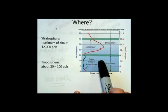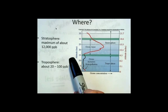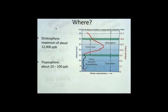So it's showing that in the stratosphere is where we find a higher concentration at 12,000 parts per billion ozone.